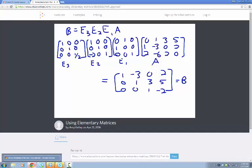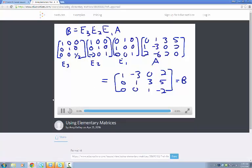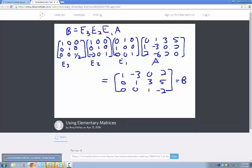To recap, we are able to use a series of elementary matrices to obtain a matrix B by allowing those elementary matrices to correspond to particular row operations. So that's it for this example. Hopefully you found it helpful. And we'll see you next time.